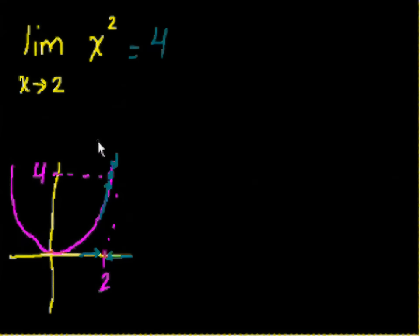So you're probably saying, Sal, this seems like a useless concept, because I could have just stuck 2 in there. And I know that, say this is f of x, that if f of x is equal to x squared, that f of 2 is equal to 4. And that would have been a no-brainer. Well, let me maybe give you one wrinkle on that, and hopefully now you'll start to see what the use of a limit is.